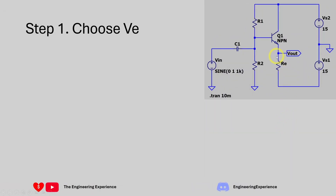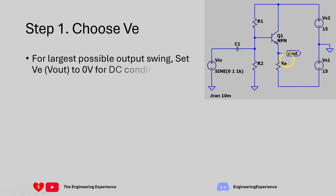For step one we need to choose the VE voltage when our input is grounded — so zero volts coming in from the input — and we need to set the output voltage. It's DC, so the voltage will be set by R1 and R2. To set the best value for VE we want to get as much swing as possible from our output, meaning we want VE to go all the way from minus 15 volts up to plus 15 volts. So for the largest possible output swing we need to set VE to zero volts.